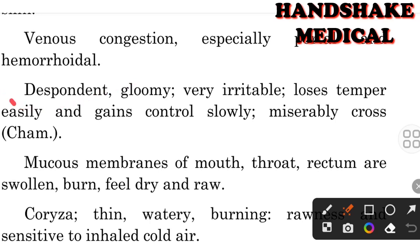Regarding the mental general symptoms: the patient is despondent, gloomy, very irritable, loses temper easily and gains control slowly, miserably cross. Despondent means they are quite hopeless — pessimistic people with no hope. Gloomy means very sad. Because they are hopeless, they remain sad, which makes them very irritable. They lose their temper easily and it takes time for them to return to a normal state.